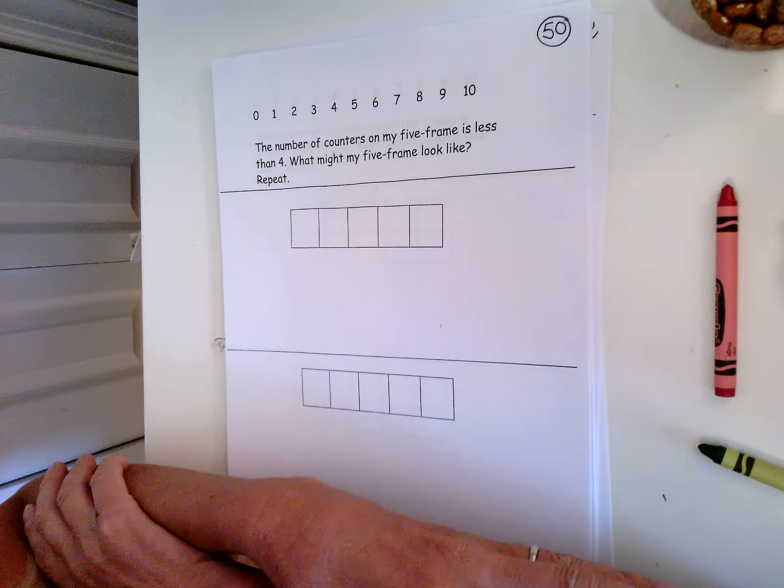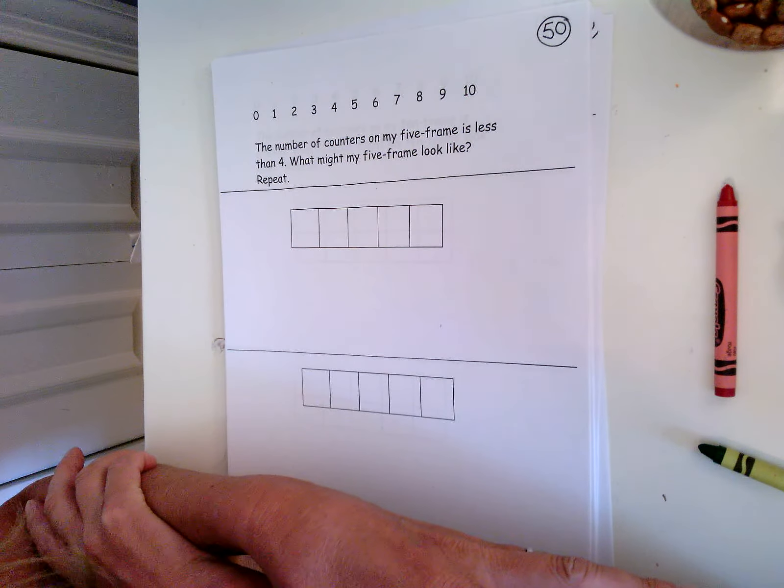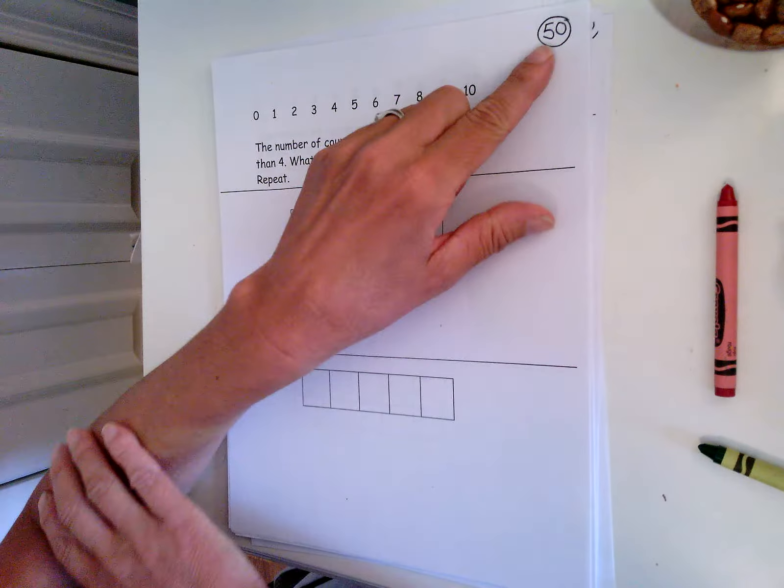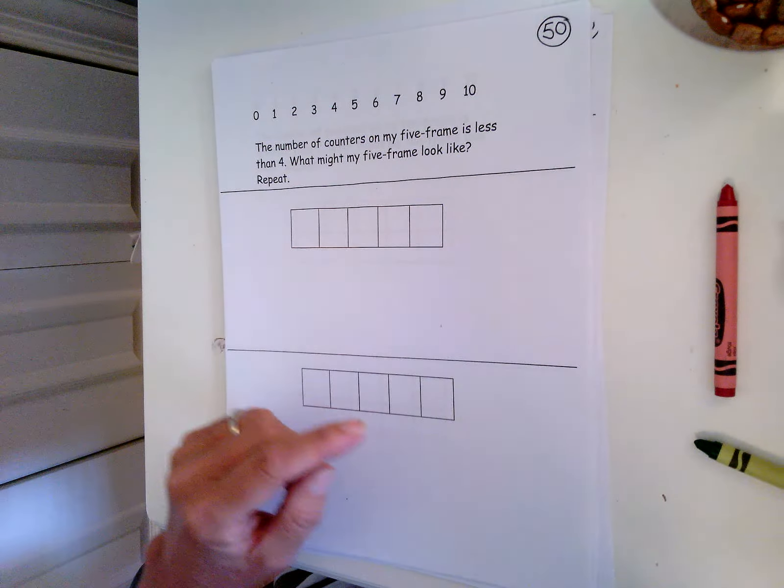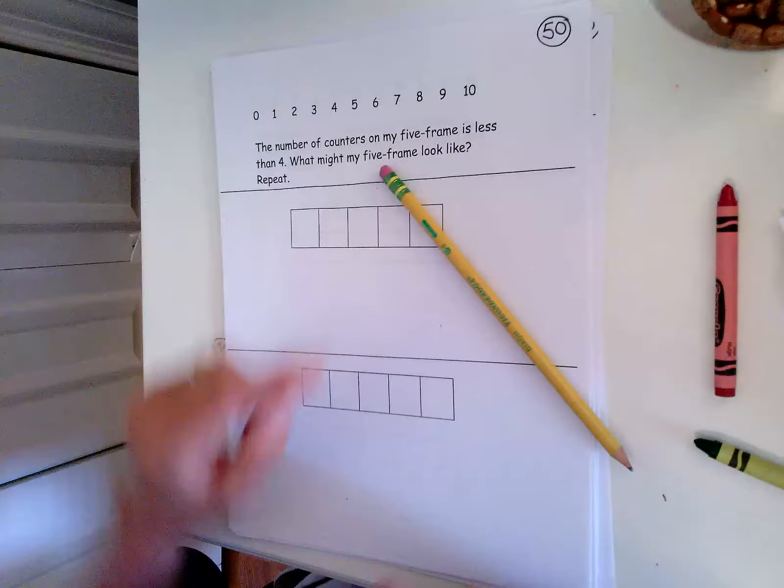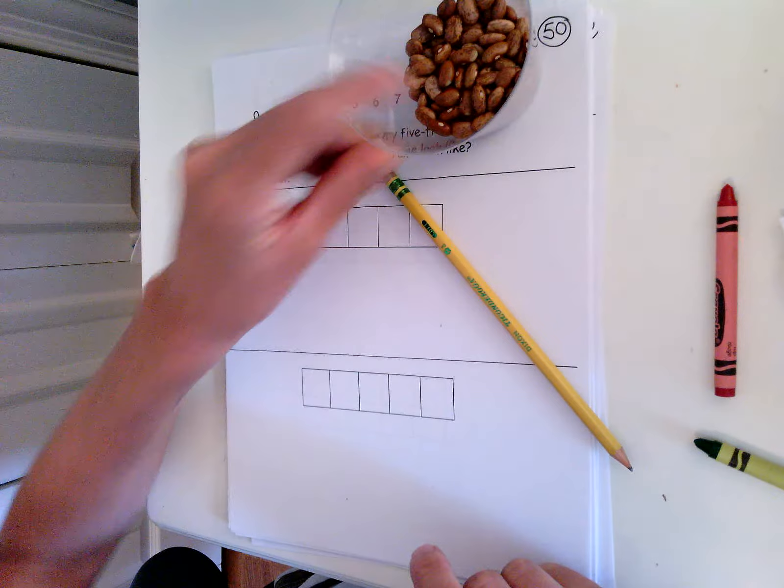We are working on problem-solving while we compare numbers. You need your math journal page 50, a pencil, crayons, and some counters.